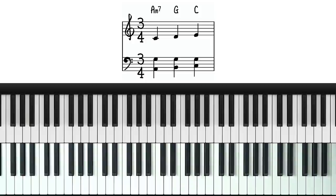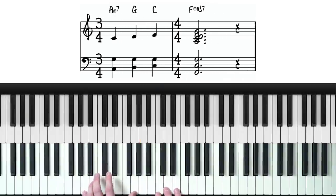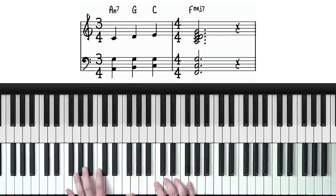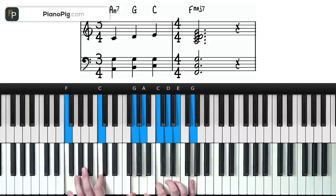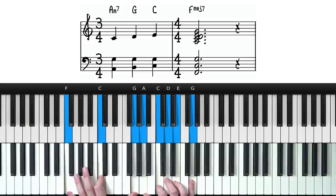And we finish this first phrase by landing on an F major. So this is the voicing I'm playing for this F. I've got the root, 5, 9, and then the 3, 5, 13, 7 and 9 again up at the top.